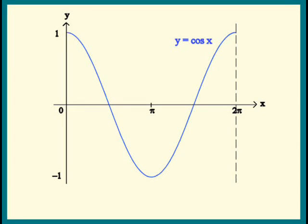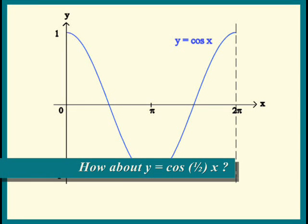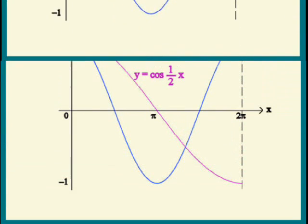Let's move on to the next example. What happens if we have cosine of 1 half of x instead? As x goes from 0 to 2 pi, what does 1 half of x do? It only goes from 0 to pi. That means it only gets through half a cycle. And here's a picture of that.